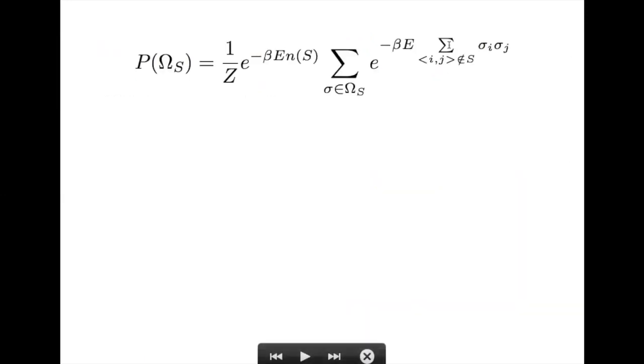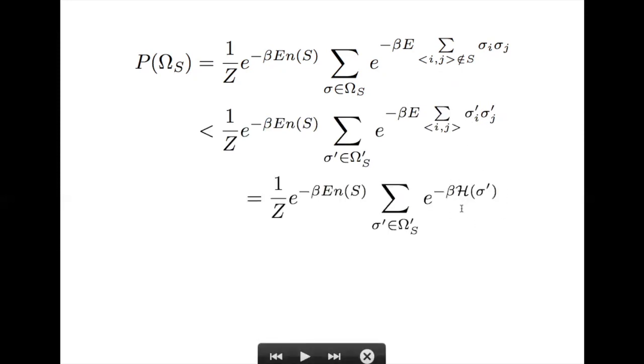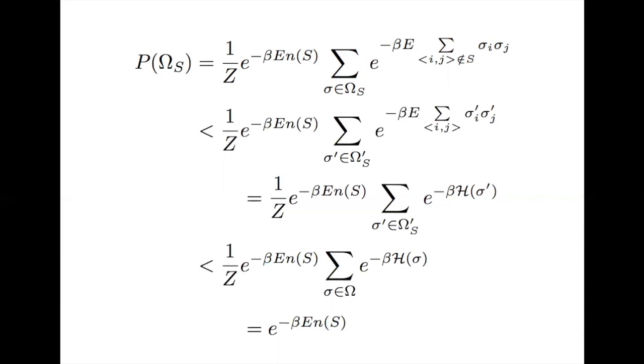So from our probability calculation we previously found, we can replace the nearest neighbor bond summation for nearest neighbors not in s with our prime mapping. But this term here, e times the summation over prime nearest neighbor bonds is precisely the Hamiltonian for our prime mapping. Because e to the negative beta h is greater than zero for all configurations, we can replace the sum over omega s prime with a sum over all configurations. But 1 over z is precisely 1 over the sum of all configurations. So those two terms cancel and we have the probability for omega s is less than e to the negative beta e n of s.